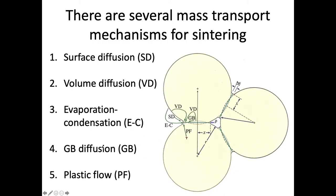We can have grain boundary diffusion, where atoms or ions move along the grain boundaries in the material. We can also have plastic flow, where we have dislocation motion and the material plastically deforms and changes shape, allowing particles to move. This is just showing an edge dislocation that can move. We're going to talk about each of these and what they mean for the sintering process.